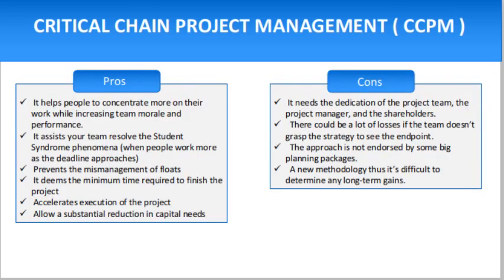The advantages of Critical Chain Project Management include: it helps people concentrate more on their work while increasing team morale and performance; it assists your team in resolving the student syndrome — where people only work harder as the deadline approaches; it prevents the mismanagement of floats; it determines the minimum time required to finish the project; it accelerates execution; and it allows a substantial reduction in capital needs.